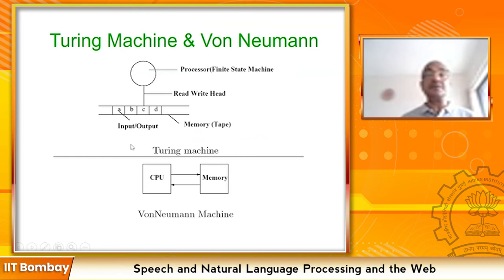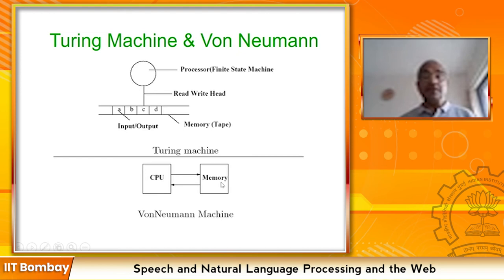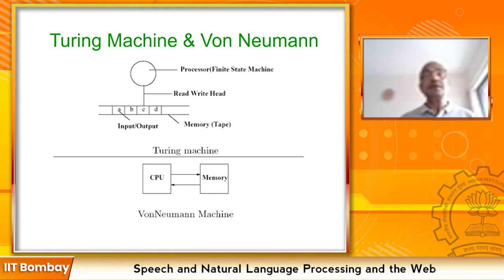The Physical Symbol System Hypothesis by Newell and Simon states that every intelligent system can be constructed by storing and processing symbols, and nothing more is necessary — intelligence is reduced to symbol processing. This led AI to focus on symbolic systems. Models of computation — Turing machine, von Neumann machine, recursively enumerable sets, lambda calculus, and neural networks — are all equivalent in computational power.